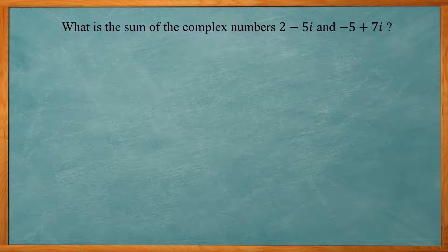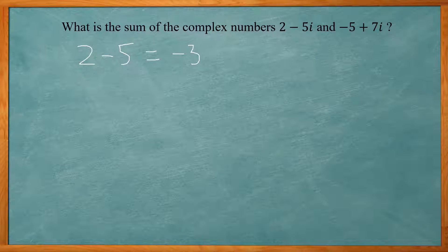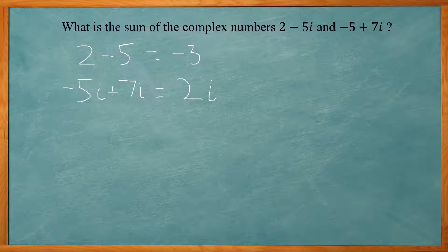Now we get to questions you might see on the ACT exam. What is the sum of the complex numbers 2 minus 5i and negative 5 plus 7i? Just like in algebra, real terms are like terms and imaginary parts are like terms. Combining the real terms: 2 minus 5 is negative 3. Combining the imaginary parts: negative 5i plus 7i gives 2i. So the answer is negative 3 plus 2i.